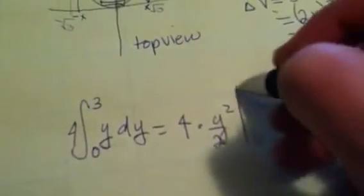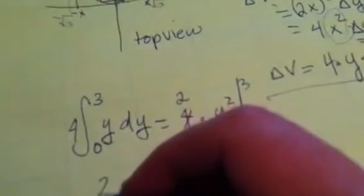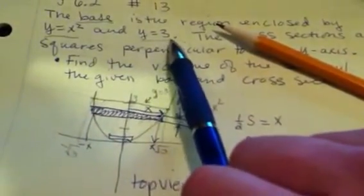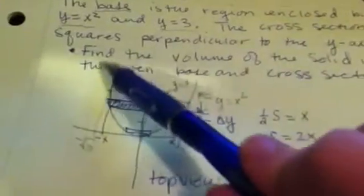Now we can use the power rule for integration, so that's equal to 4 times y squared divided by 2, evaluated from 0 to 3. Two goes into 4 twice, and we have 2y squared evaluated from 0 to 3, which is equal to 2 times 3 squared minus 2 times 0 squared, which is equal to 2 times 9 equals 18. Voila! The volume whose base is bounded by x squared and y equals 3, with cross-sectional areas perpendicular to the y-axis which are squares, is equal to 18.